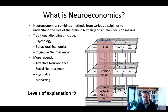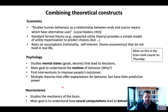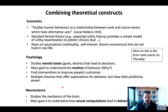Different disciplines have traditionally been interested in different levels of explanation, but of the same types of behaviors. This is what we're integrating in neuroeconomics, and it leads to some difficulties in communicating across disciplines — but that is quite easily solved with some study and effort. Economics studies human behavior as a relationship between ends and scarce means which have alternative use. Economists have been very good at developing standard formal theories — mathematical formulations of how behavior should be — that provide simple models such as utility maximization, which allow you to predict choices.